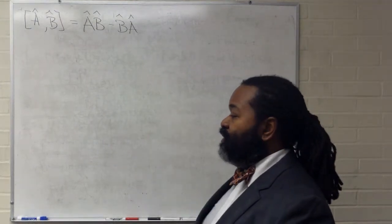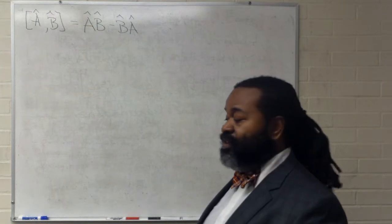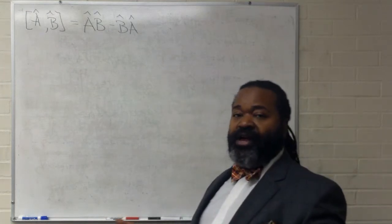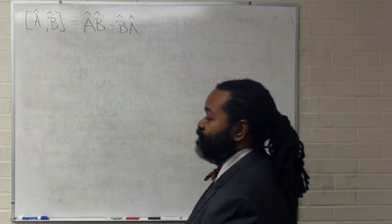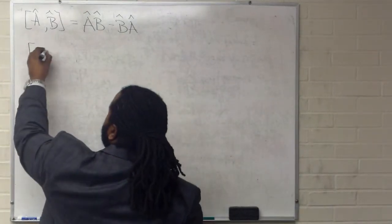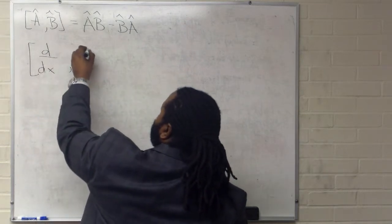So step one is to set that up, step two we will evaluate what we have as a result of the setup, and then finally we simplify and figure out the value of our commutator. So in this case let's consider the commutation relationship between first derivative and second derivative.